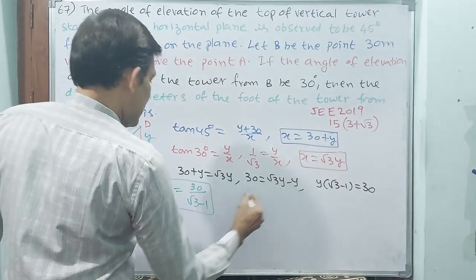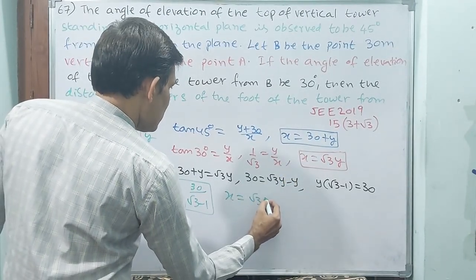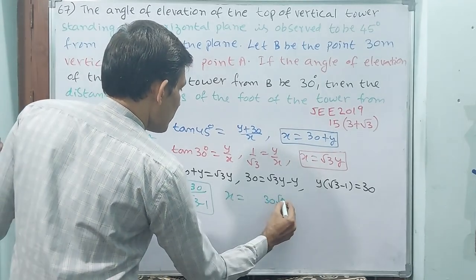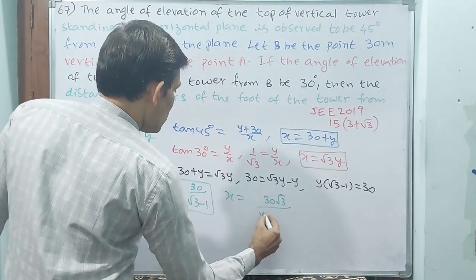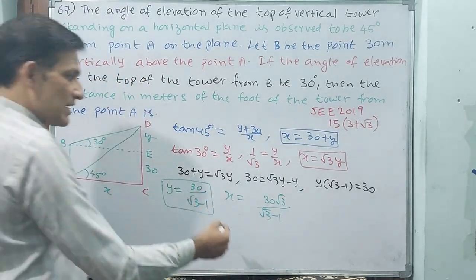So y equals 30/(√3-1). See, x equals √3 times 30/(√3-1), or 30√3/(√3-1).